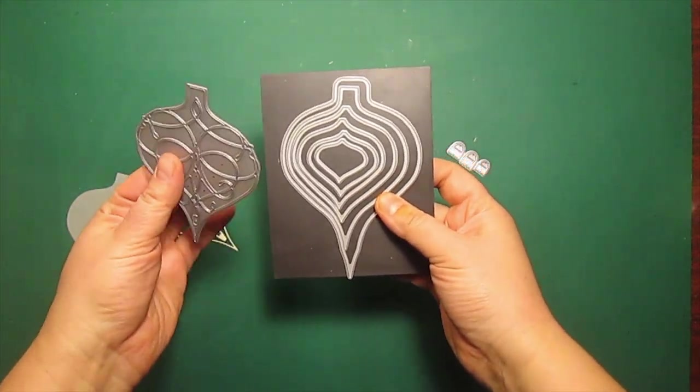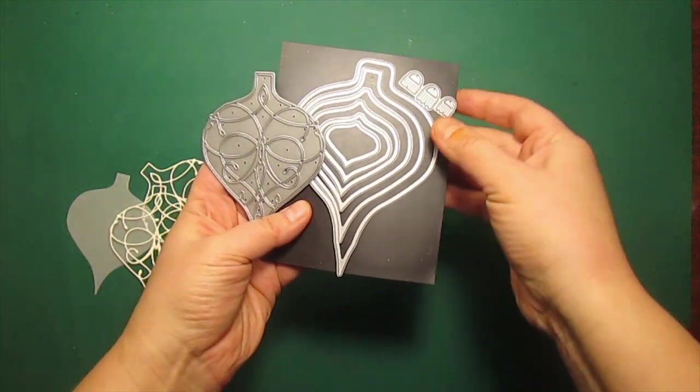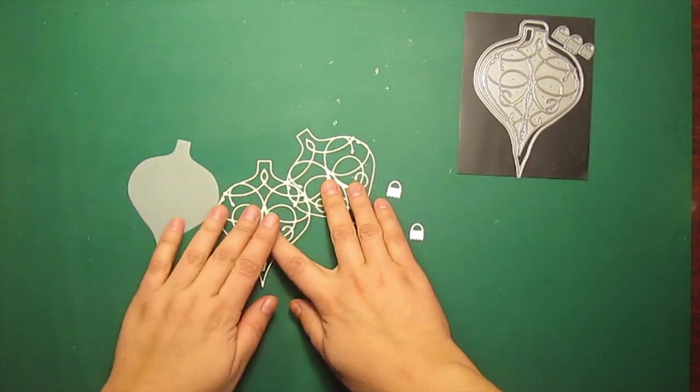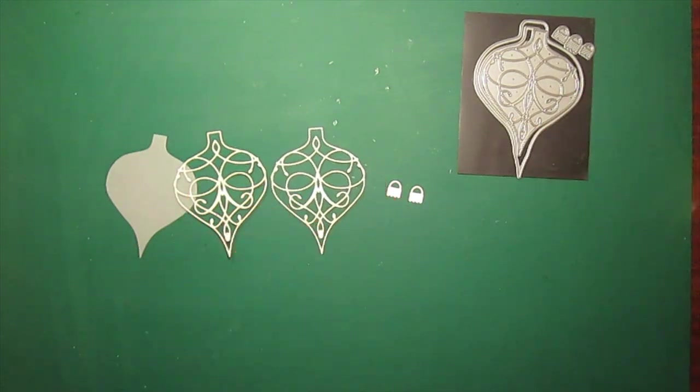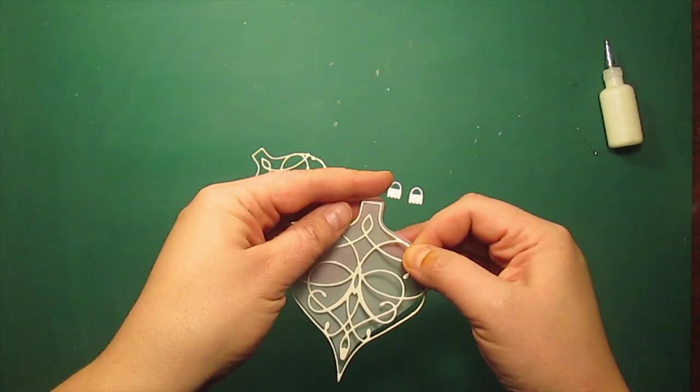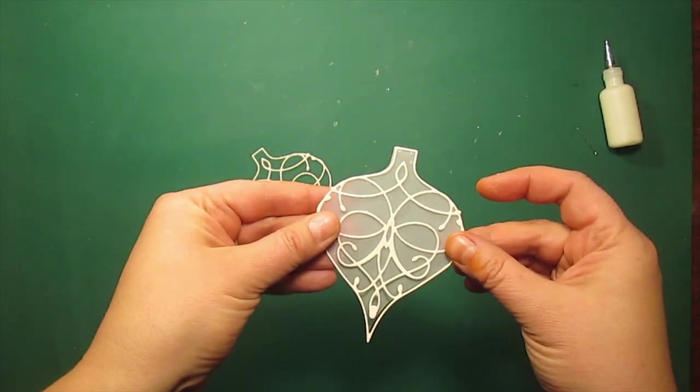The third one will be similar but this time I am using Leroux Ornament Die and a vellum background. So I am going to adhere the outline to the background again using the liquid glue.